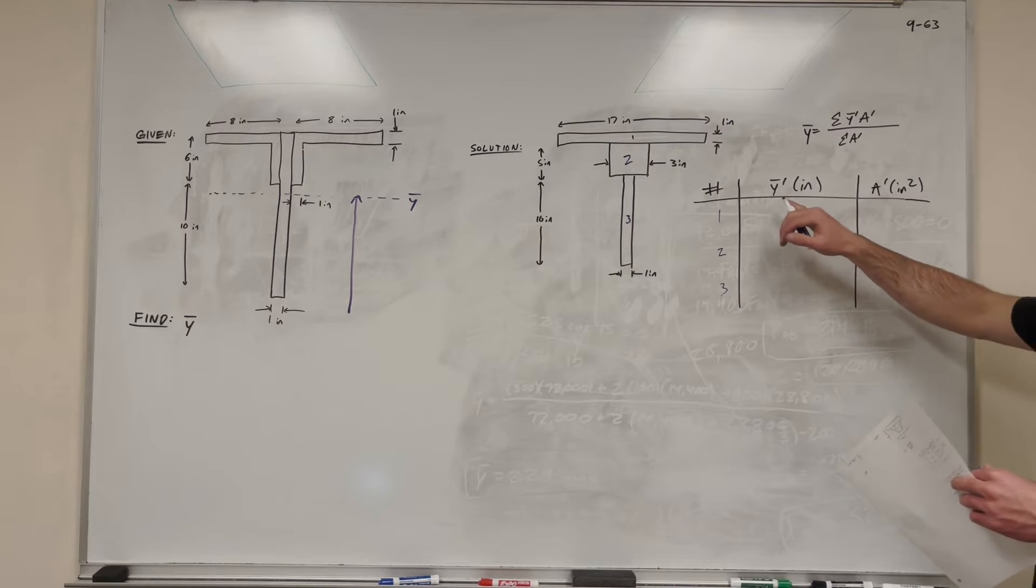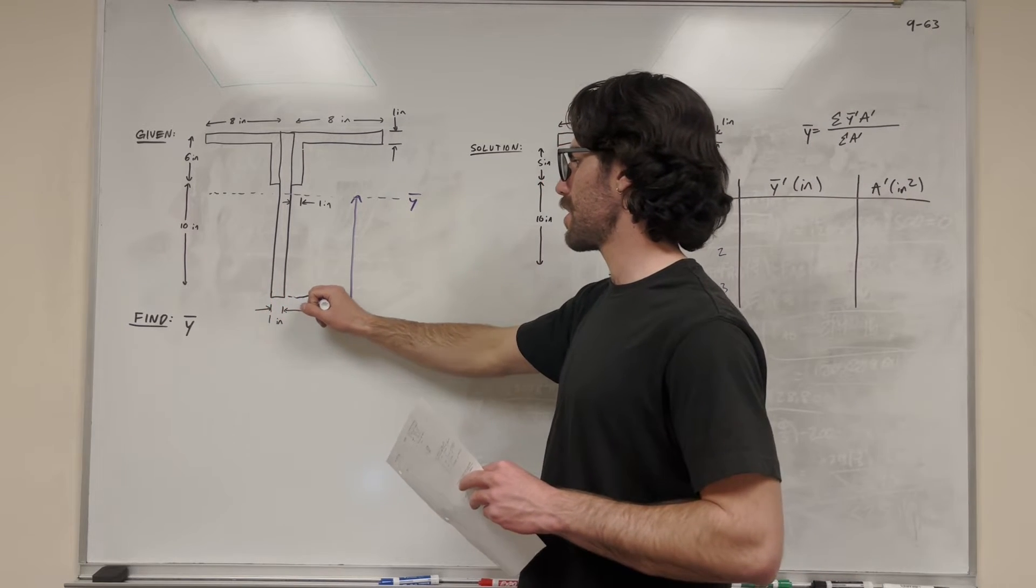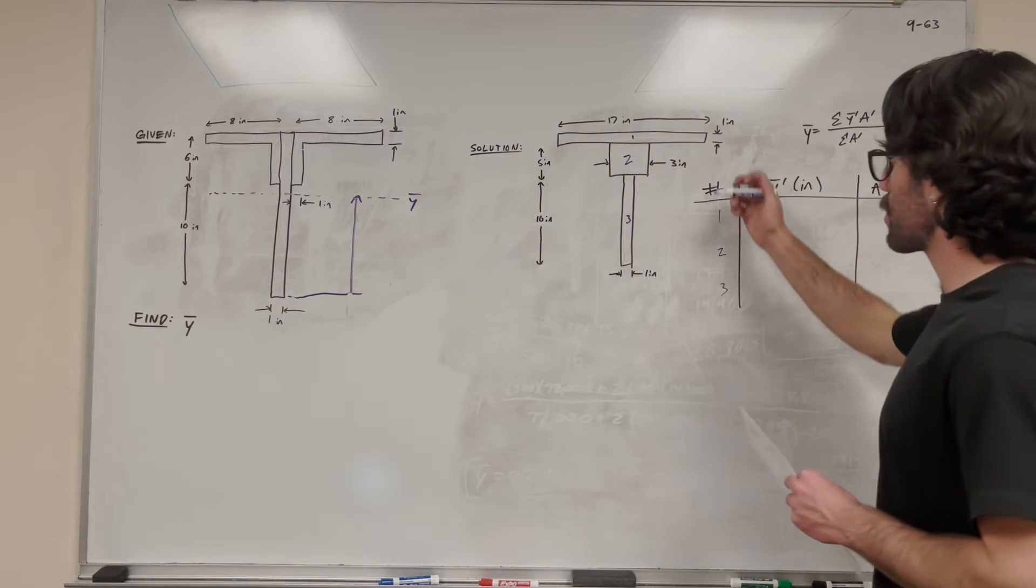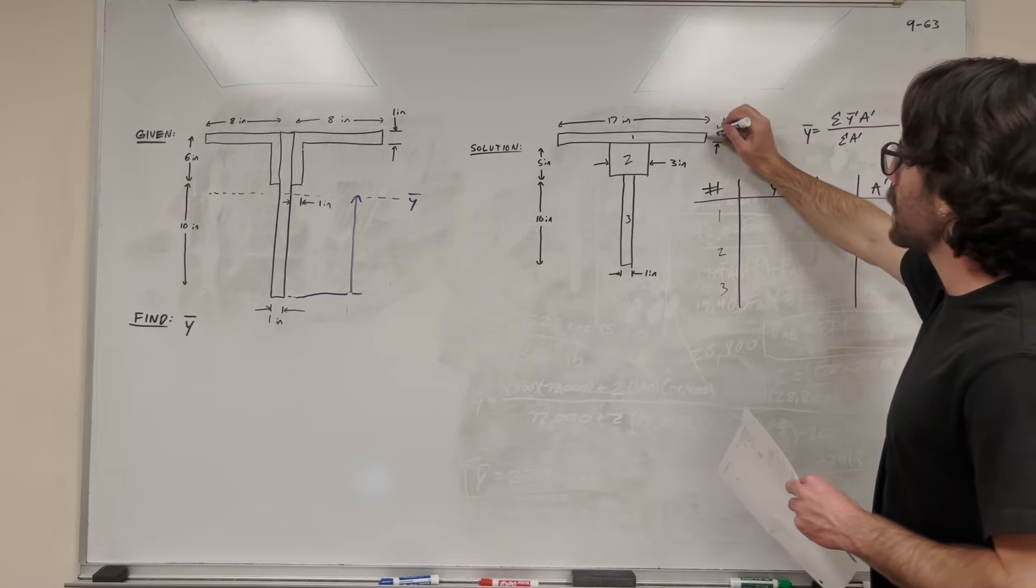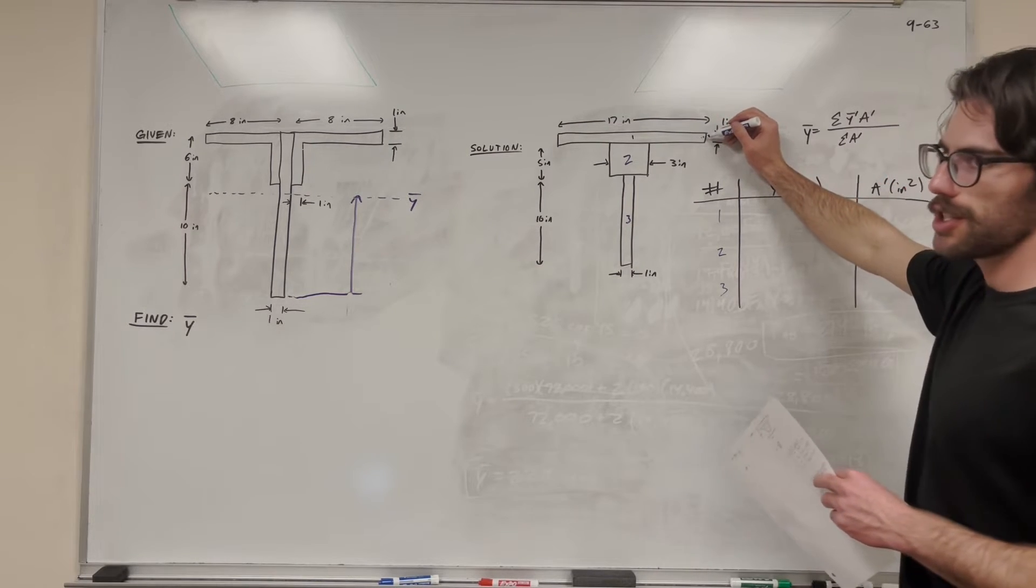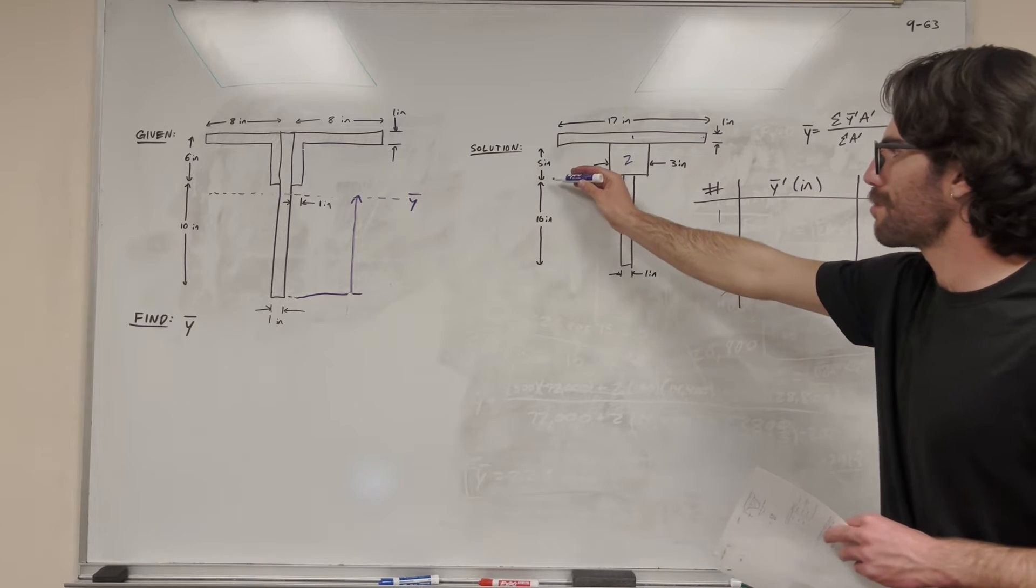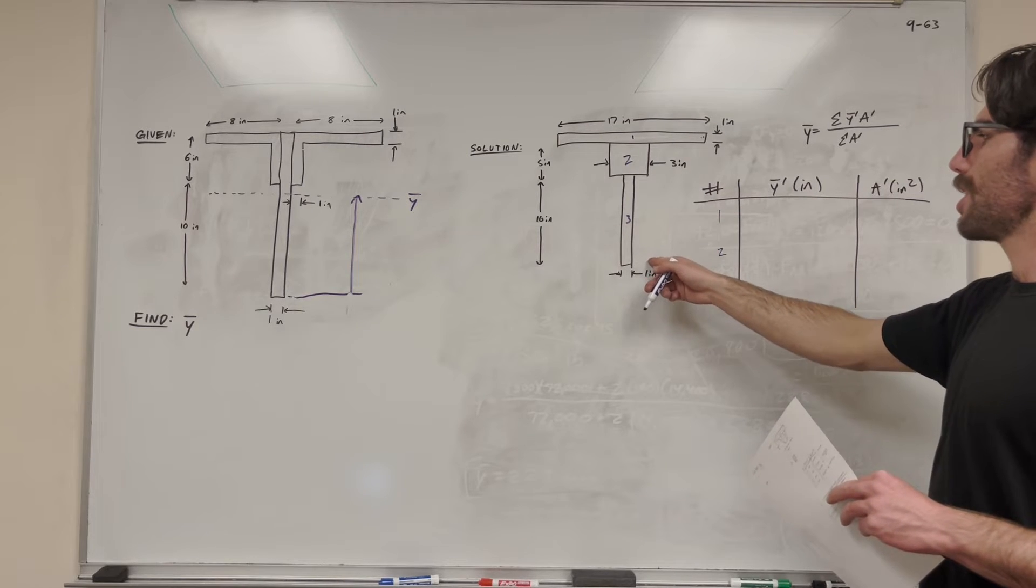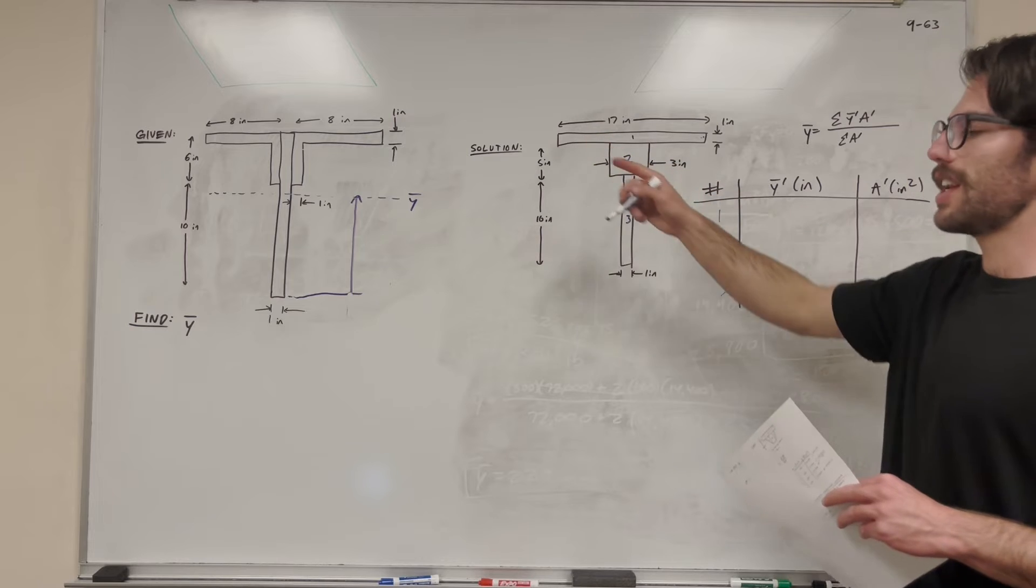So let's first find the center of mass of each shape. The center of mass is starting at our axis here, which is our x-axis, and we're just going to go up from there. So if we're looking for the center of mass of shape one, well it's an inch thick, so its center of mass is going to be 0.5 inches from the bottom of the shape. But we know that it's 10 inches plus 5 inches to the bottom of the shape. So when we're finding Y bar, it's from the bottom of the shape here. So it's going to be 10 inches plus 5 inches plus half of an inch.